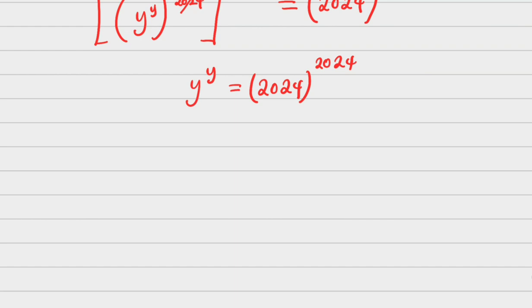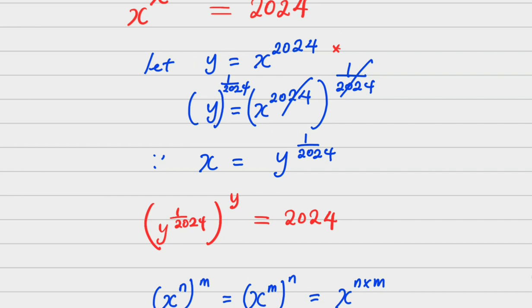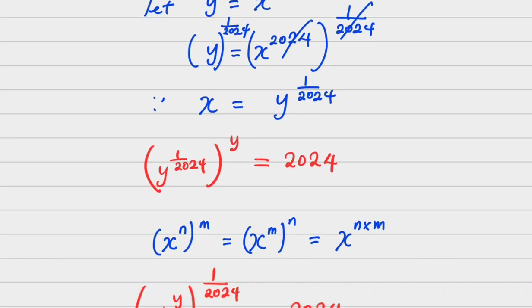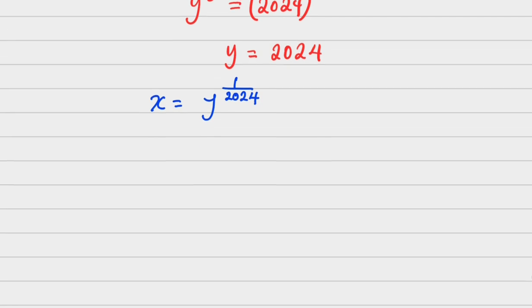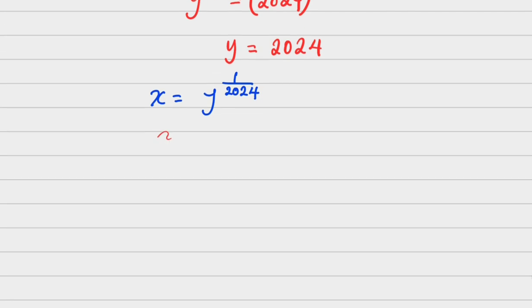By inspection, we can conclude that y = 2024. But remember, we're not looking for y; we're actually looking for x. We know that x = y^(1/2024). Therefore, x = 2024^(1/2024).